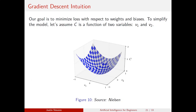The algorithm we're going to use is gradient descent — you may have heard of this from Newton's method or numerical methods. To simplify, let's say we have a cost function of two variables v1 and v2 (in practice it's a function of 12,000 variables). Our goal is to minimize the cost function. We start at an arbitrary point and see how nudging in different directions affects the cost function to find the optimal direction. The change in C is approximately (∂C/∂v1)·Δv1 + (∂C/∂v2)·Δv2 — a simple linear approximation.